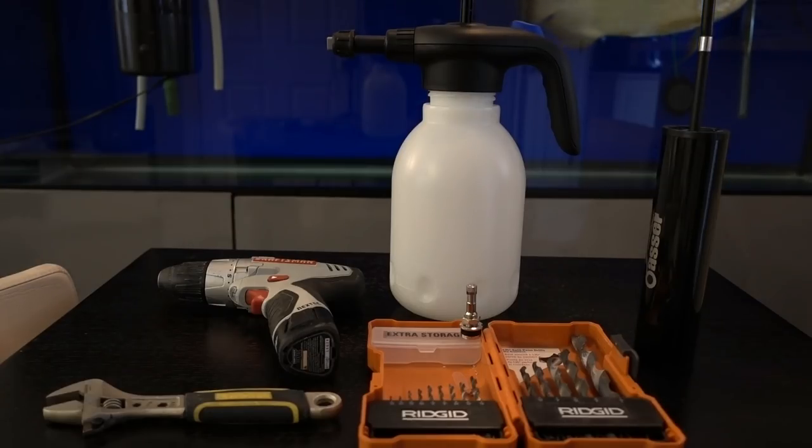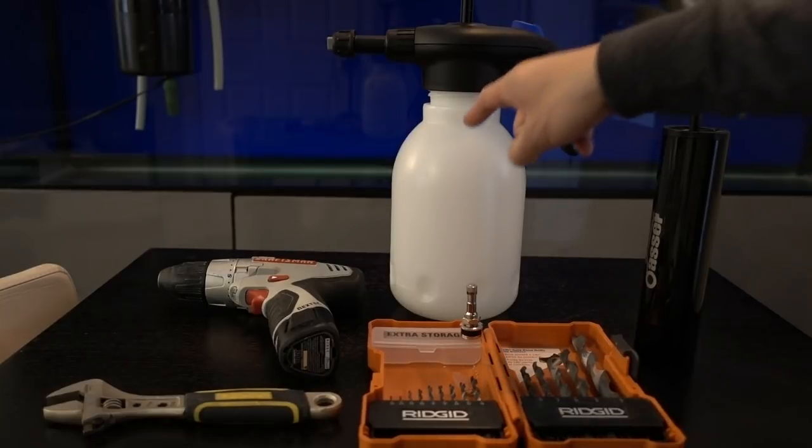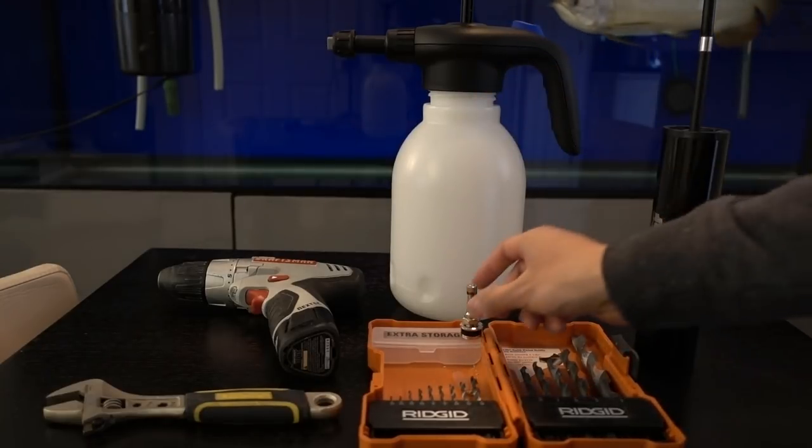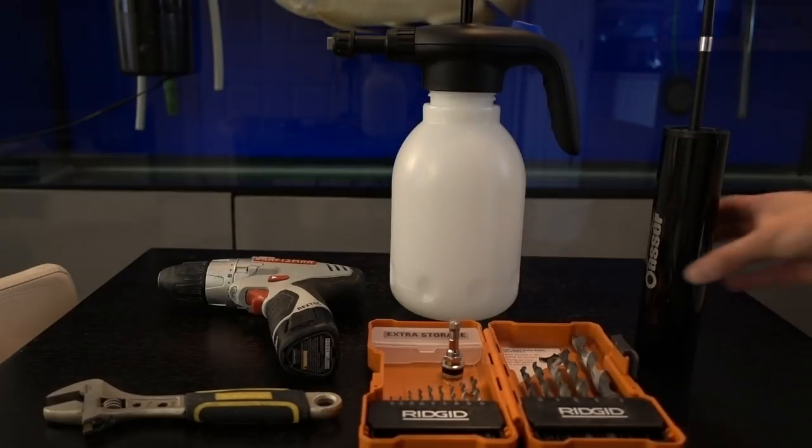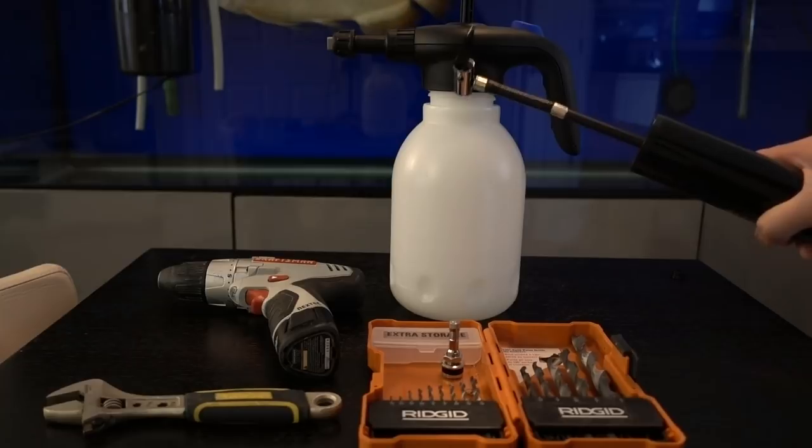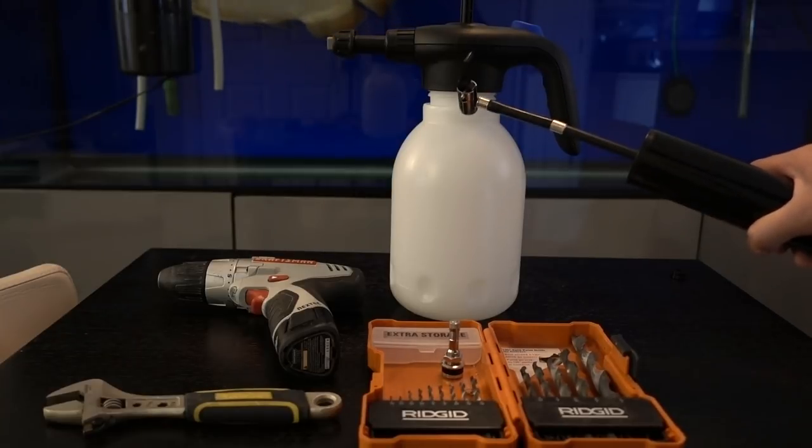So we're going to need an electrical drill, some drill bits, and a wrench to basically first drill a hole into the side of this bottle here where we're going to install this bolt-in valve stem using the wrench. Once we got that done, we're going to be able to affix this pump right into there to help pressurize this bottle.